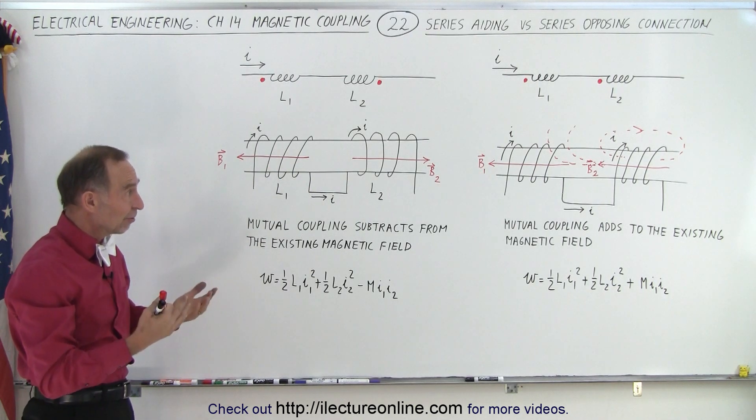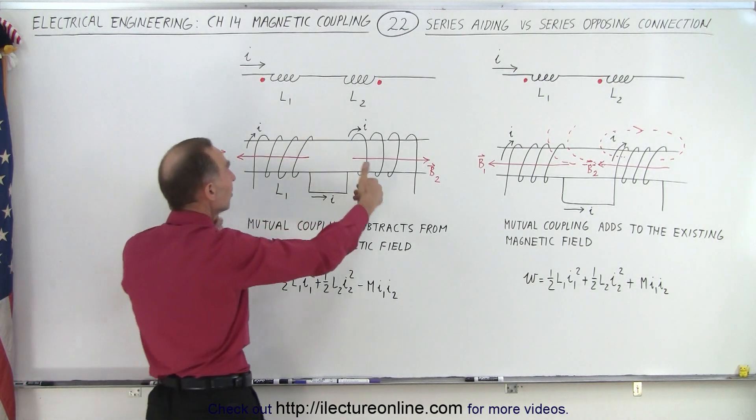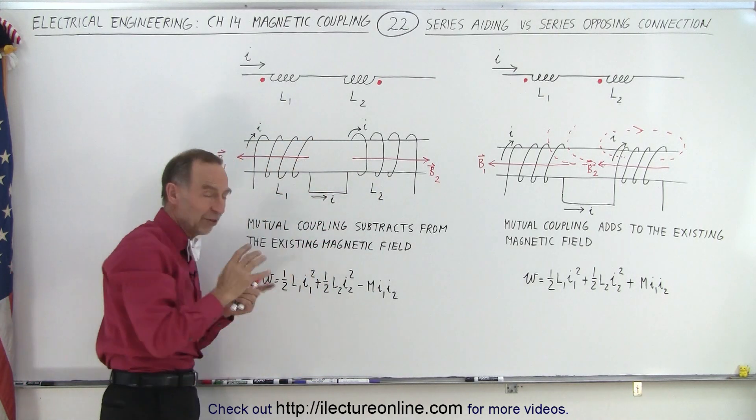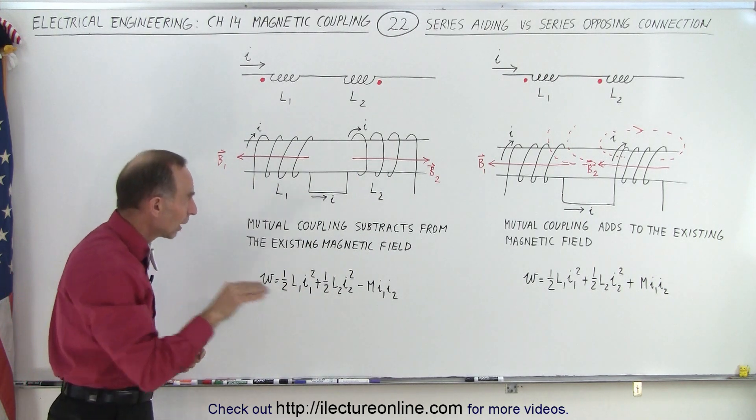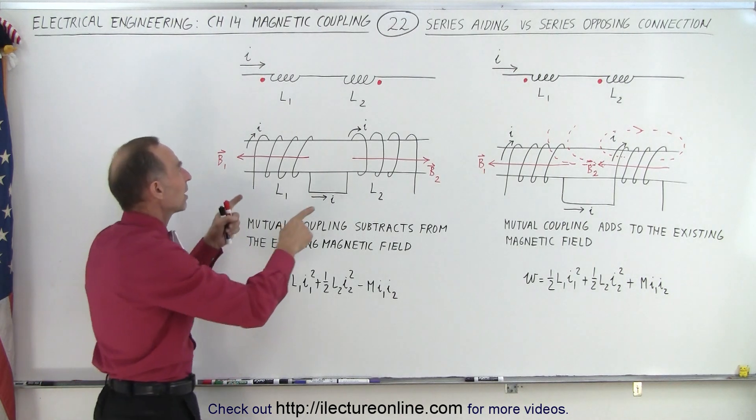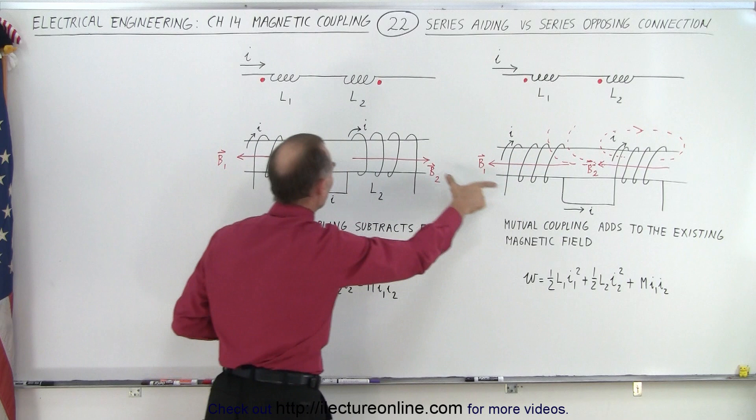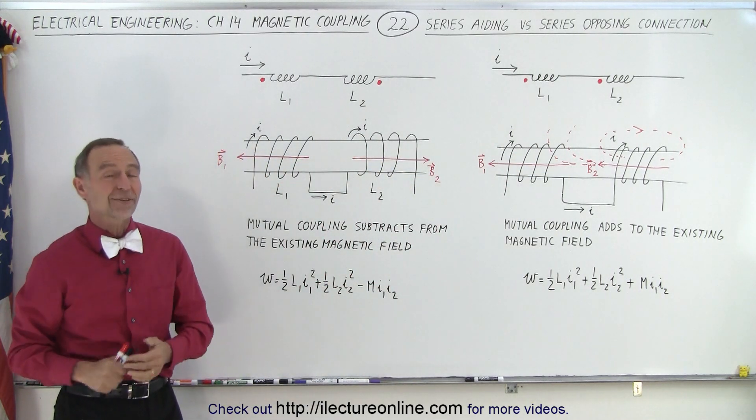That hopefully will clarify, first of all, what that means, what the dot symbol means. It's simply a differential between how the coils are wound and how the current enters the coil on one side or on the other side, therefore creating magnetic fields either in the same direction or magnetic fields in the opposite direction. And that is how that works.